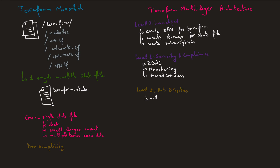Then comes level two, where we configure the hub and spoke networks — mainly creating the network for our infrastructure. We create the hub network, the different spokes — a spoke for each environment, each application, or each team — and then create the peering between the spokes and the hub network. This also includes configuring disaster recovery plans and creating backups for our infrastructure. Now that the spokes are created, we go to level three and deploy our application infrastructure.